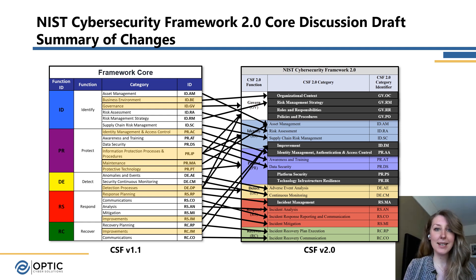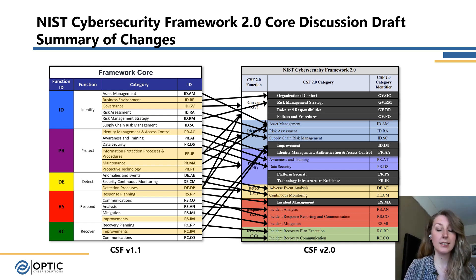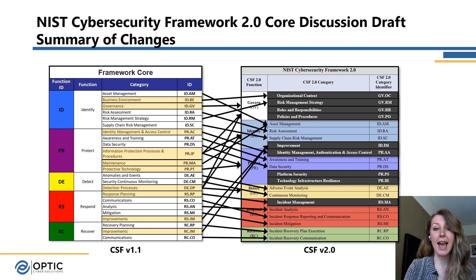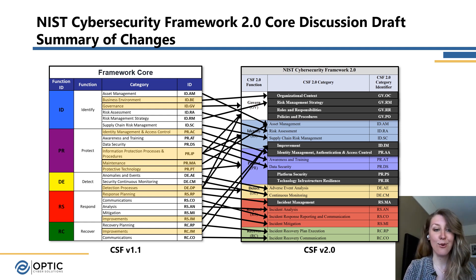Here I wanted to bring it all together to wrap up this overview. We can see everything in one picture — on the left is CSF 1.1, everything in yellow is being proposed to be removed. But if we follow the arrows to the right, all categories in black or dark gray are the ones being added and where a lot of those are being moved into. Hopefully walking through step by step helps to see those relationships as we move from 1.1 to 2.0.